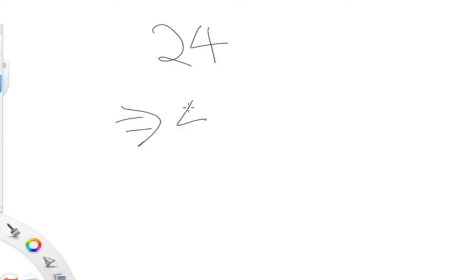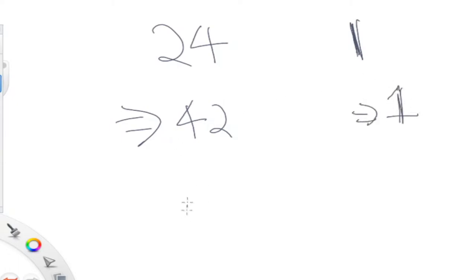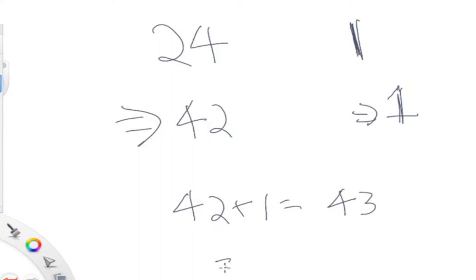So let's say we have 24. If you reverse 24, you're just going to get 42. If you have 1, reverse 1, you still just get 1 — you reverse all the digits. So now when you add 42 plus 1, you get 43. Now if you reverse 43 — reverse all the digits of 43 — you get 34. So that's basically the problem.